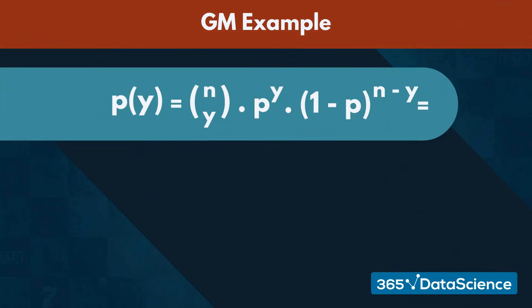If we wish to use the probability distribution formula, we need to plug in 3 for Y, 5 for N, and 0.6 for P.